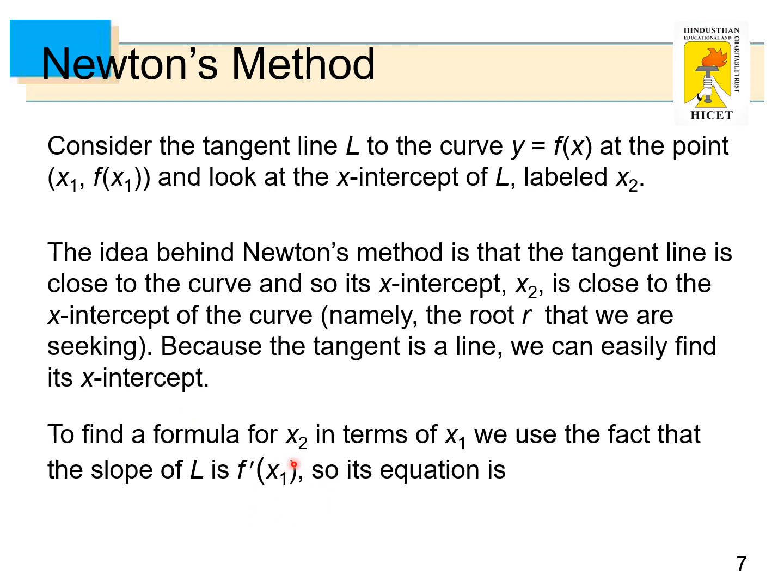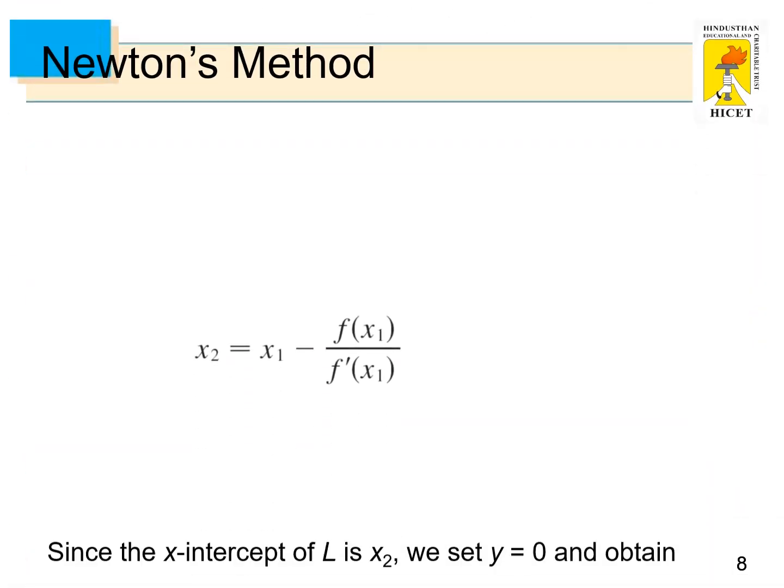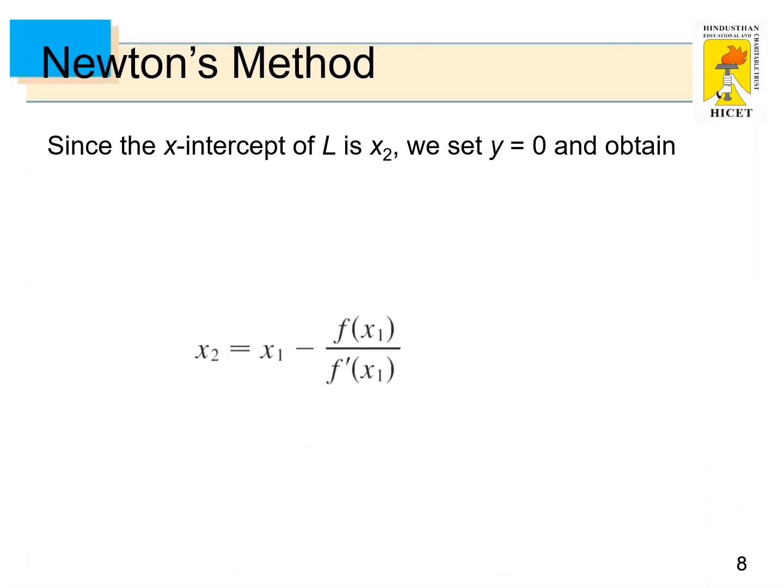To find the formula for x2 in terms of x1, we use the fact that the slope of L is f'(x1). So its equation is y - f(x1) = f'(x1)(x - x1). The x-intercept of L is x2. We set y = 0 and obtain 0 - f(x1) = f'(x1)(x2 - x1).